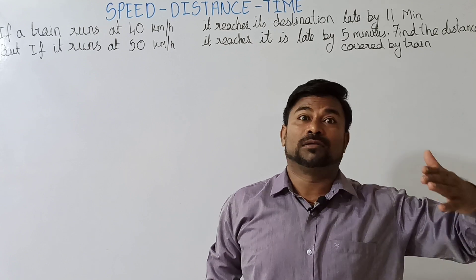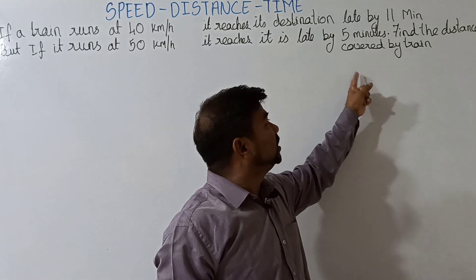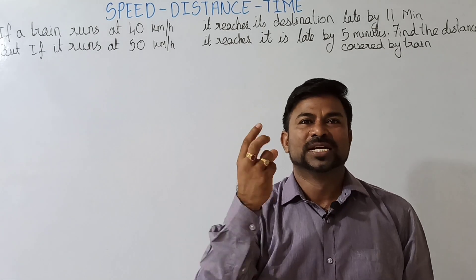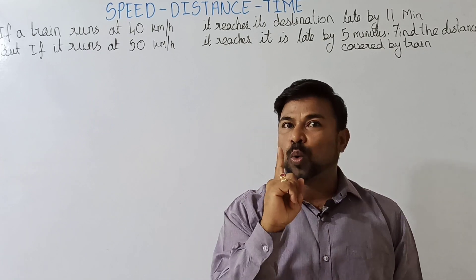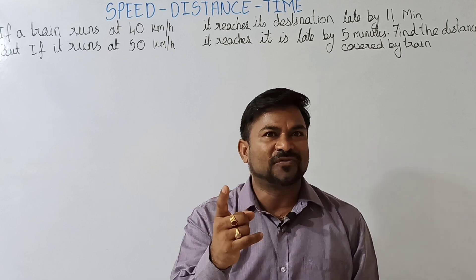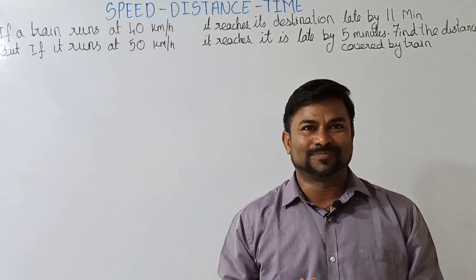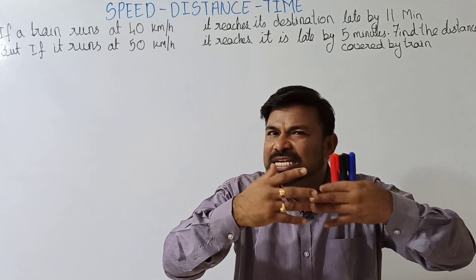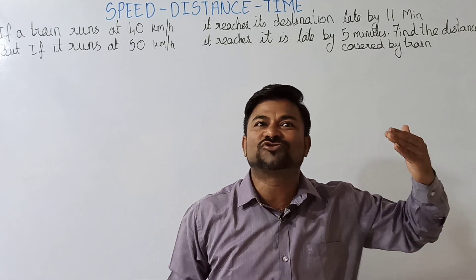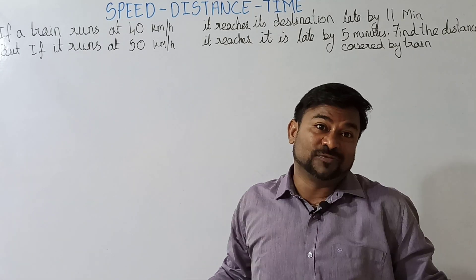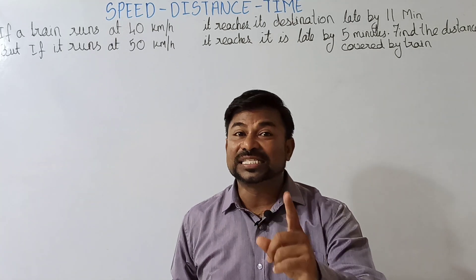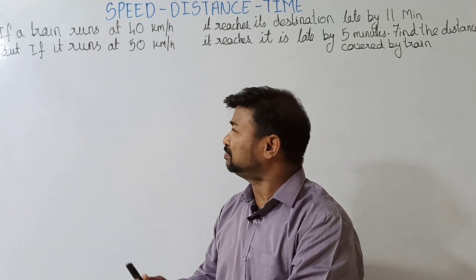The question asks: find the distance covered by the train. So here the three concepts are speed, distance, and time — and the distance is the unknown. Out of these three, one is missing and the other two are given in clues. First, think about which formula deals with speed, distance, and time, how many variables there are, which is unknown, and what relation is given in the question. The distance is the variable here, so let the distance traveled by the train be x kilometers.